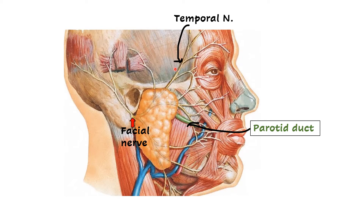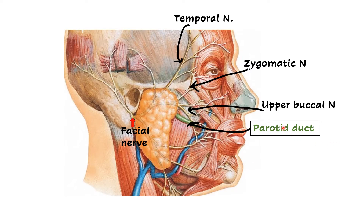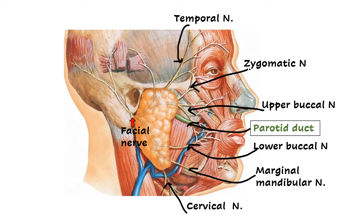The first branch is the temporal branch — it is going to the temporal region. Then next we have the zygomatic branch. This is the zygomatic arch here, and the zygomatic bone is located here, so that is why the name zygomatic nerve. Then we have two buccal branches — upper buccal and lower buccal — in the cheek area. Finally, along the lower border of the mandible, we have the marginal mandibular branch, and the one which reaches the cervical region is the cervical branch.